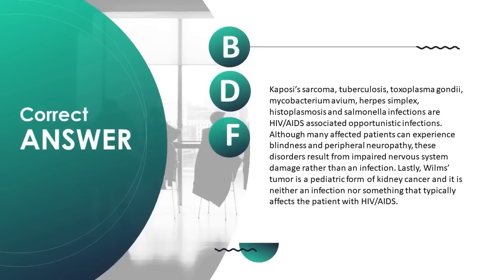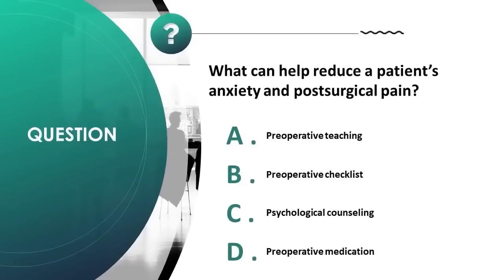Although many affected patients can experience blindness and peripheral neuropathy, these disorders result from nervous system damage rather than infection. Wilms' tumor is a pediatric form of kidney cancer and is neither an infection nor something that typically affects patients with HIV/AIDS. What can help reduce a patient's anxiety and post-surgical pain?